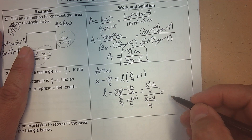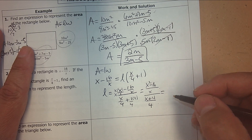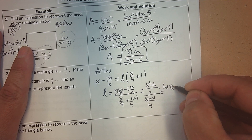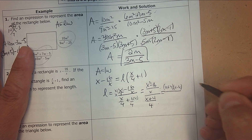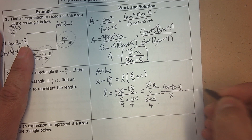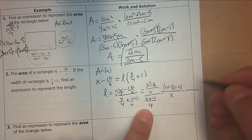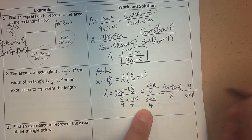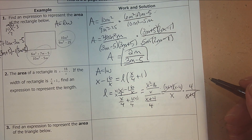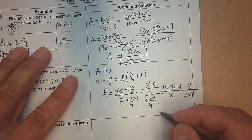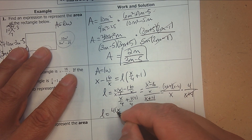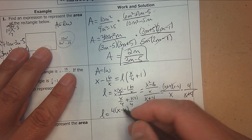Now that I have one fraction over one fraction, I can multiply by the reciprocal. x squared take away 16 factors as x plus 4 times x subtract 4. The reciprocal is 4 over x plus 4. So the length is 4 times x subtract 4 over x.